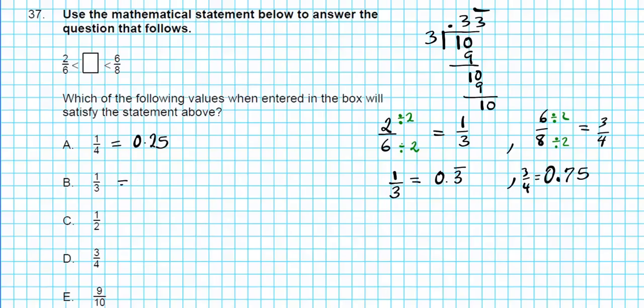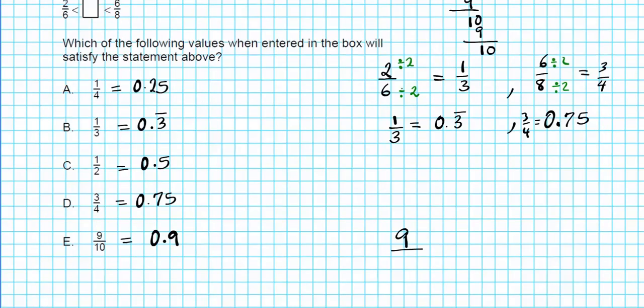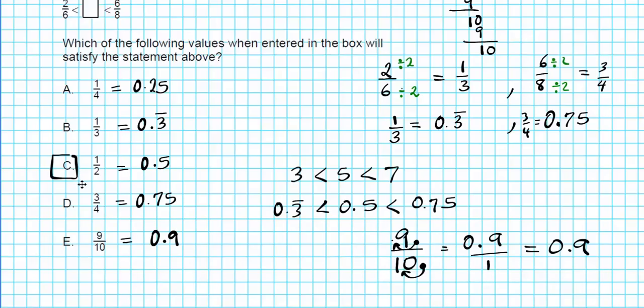Let's see which of these numbers fall in between these two values here. A quarter is 25 cents, 0.25. One-third is zero point three repeating. One half is half a dollar, fifty cents. Three quarters is zero point seven five. Nine tenths is zero point nine. Nine over ten, convert this to decimal format just put the decimal point there, move it to the left one, and we have zero point nine. So which of these numbers fall between point three and point seven five? The answer is option letter C, because five is between three and seven. So zero point three is less than zero point five, and zero point five is less than zero point seven five. That's why our answer is option letter C.